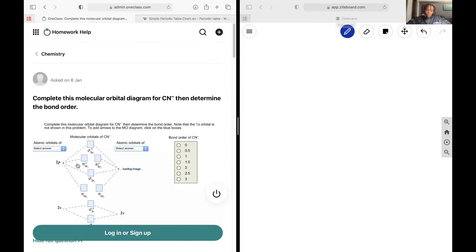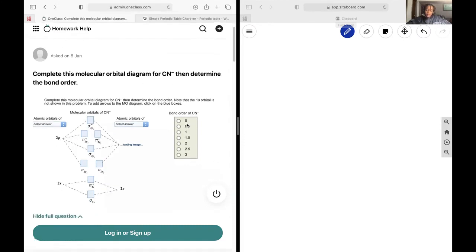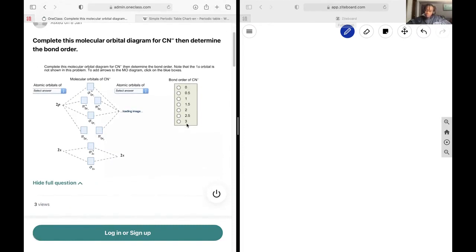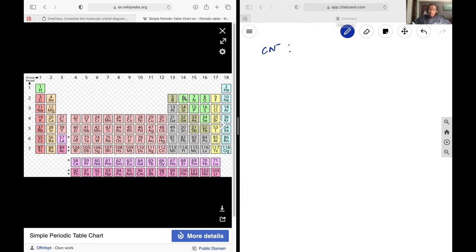Next up, we want to complete the molecular orbital diagram for CN- and determine the bond order. For carbon, if I just look at the periodic table really quickly, carbon has six electrons and nitrogen has seven plus one electrons, so I'm going to have six electrons on the carbon side and eight electrons to distribute on the nitrogen side.